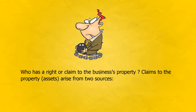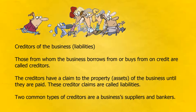Who has a right or claim to the business's property? Claims to the property arise from two sources. Creditors of the business — liabilities. Those from whom the business borrows from or buys from on credit are called creditors. The creditors have a claim to the property of the business until they are paid. These creditor claims are called liabilities.